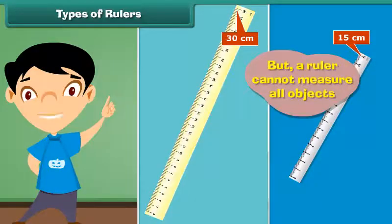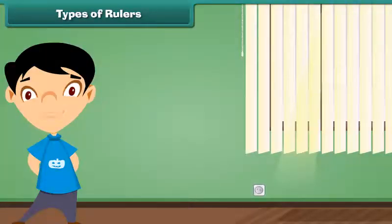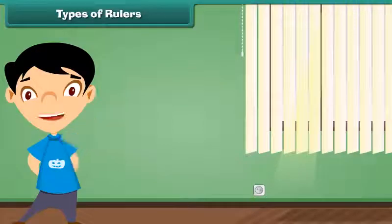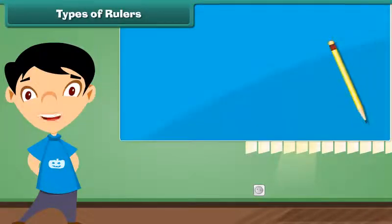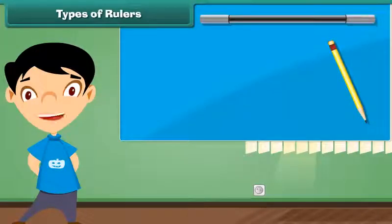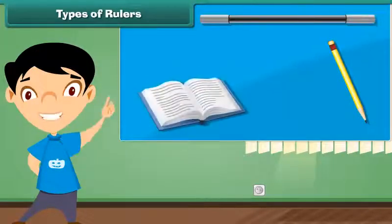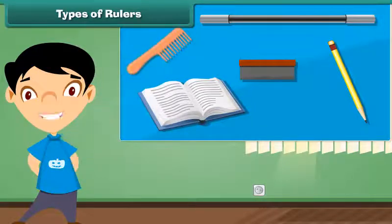But a ruler cannot measure all objects. A ruler is used to measure only short length objects such as pencil, stick, notebook, duster, comb, etc.